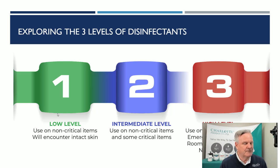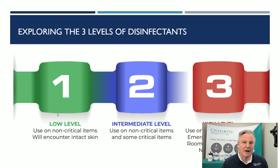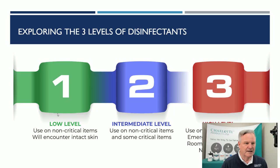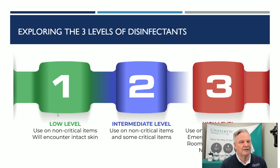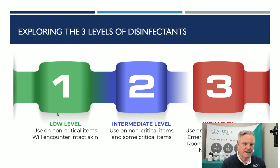The first level is low-level, and that's when you're using a disinfectant where you need some basic peace-of-mind disinfectant properties, but you're not going to use it on anything that is a critical item. It will encounter intact skin — meaning skin that does not have open wounds or cuts. Then you'll move to an intermediate level, which you may decide you need for your facility, and that's for use on non-critical items and also some critical items — what we call our middle-of-the-road disinfectant.